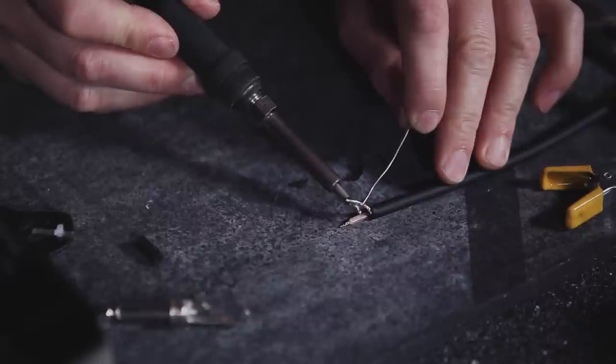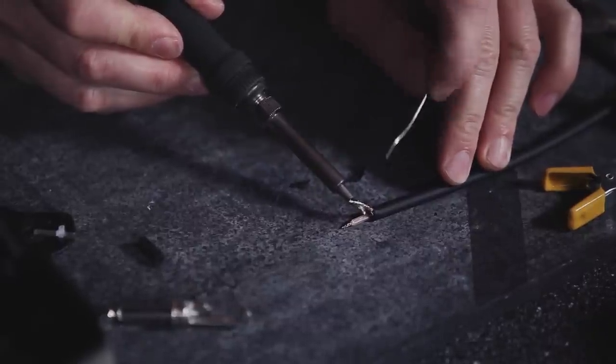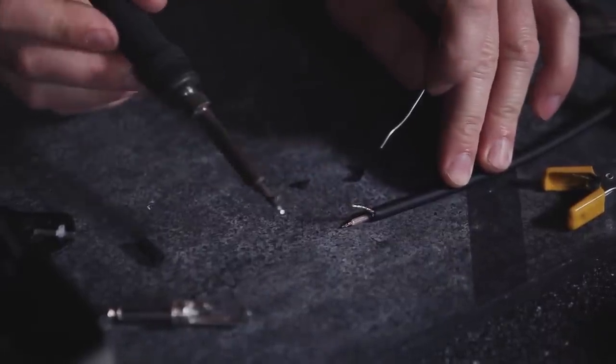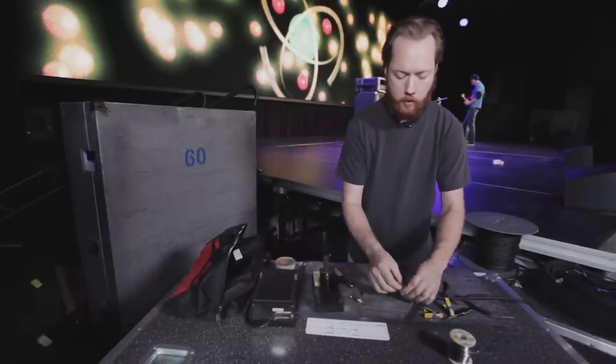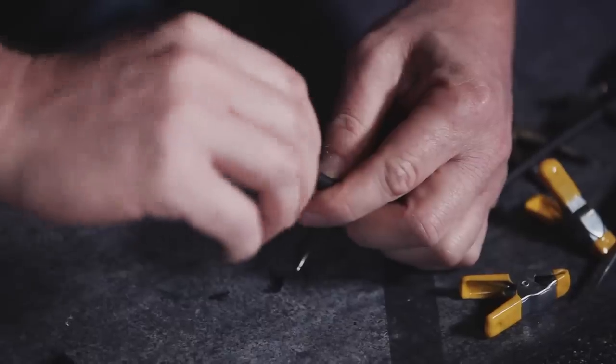Once the conductor is preheated, we're going to fill the solder. We're going to go all the way down the ground wire so that we can form it, and then go ahead and tin the center conductor as well.